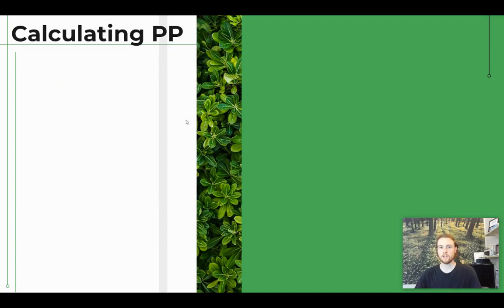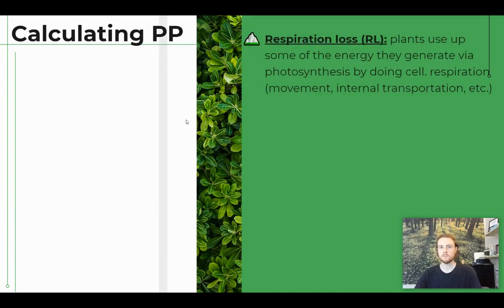Now we'll look at how to actually calculate primary productivity. The first thing to remember is that plants use up some of the energy they harness from the sun for cellular respiration — things like fueling movement or internal transportation, just like humans use energy for digestion and tissue repair. Think of respiration loss as the amount of energy that plants use just to keep themselves running, or like the taxes taken out of the plant's paycheck.